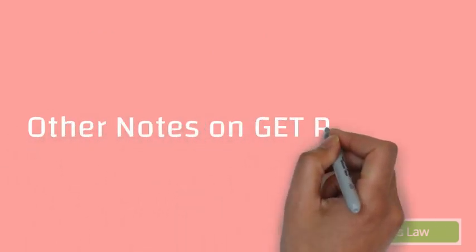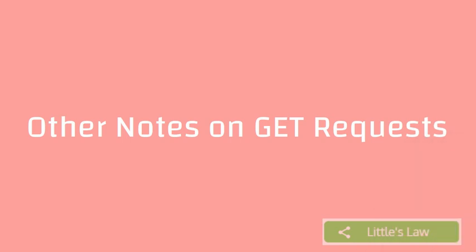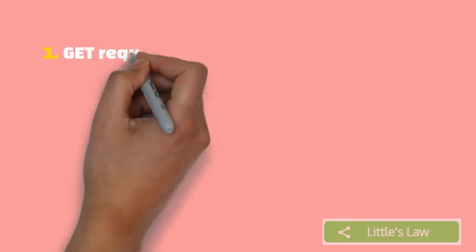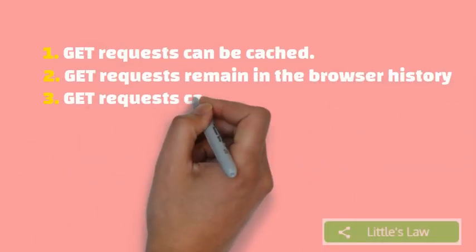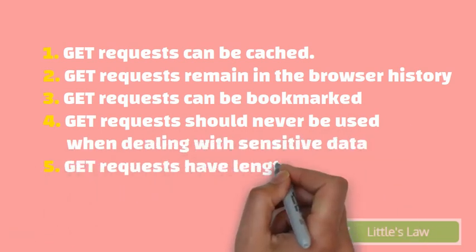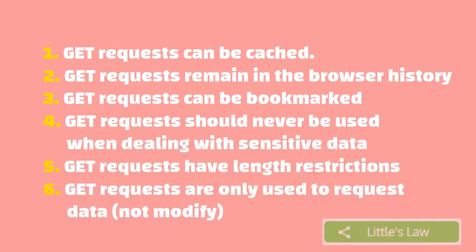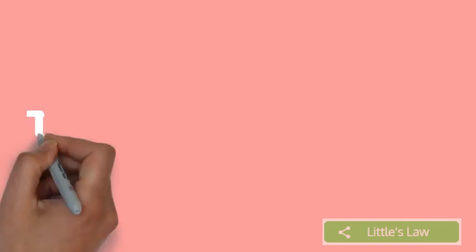GET requests can be cached, GET requests remain in your browser history, GET requests can be bookmarked, and GET requests should never be used when dealing with sensitive data — because they can be cached, they remain in your browser history, and they can be bookmarked. GET requests also have length restrictions and are only used to request data, not for any other type of modification.